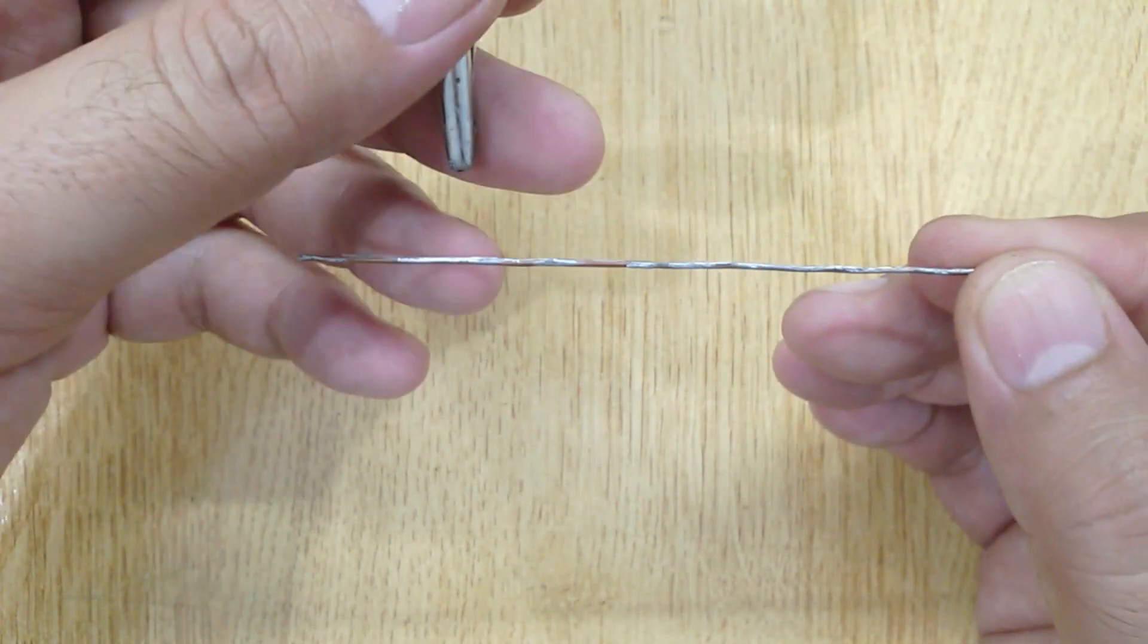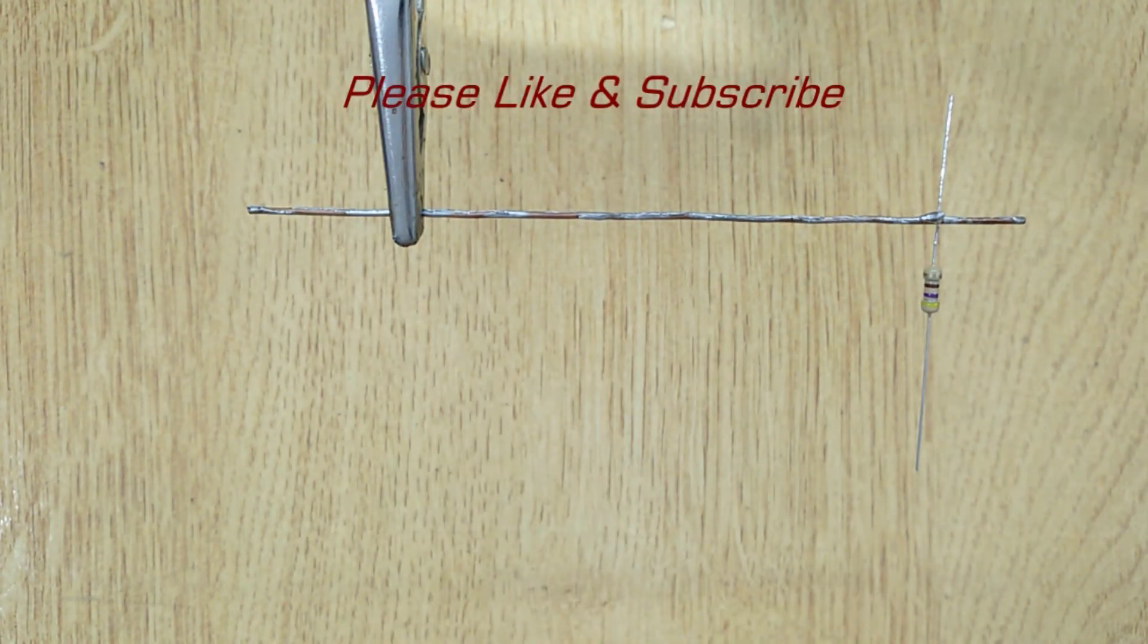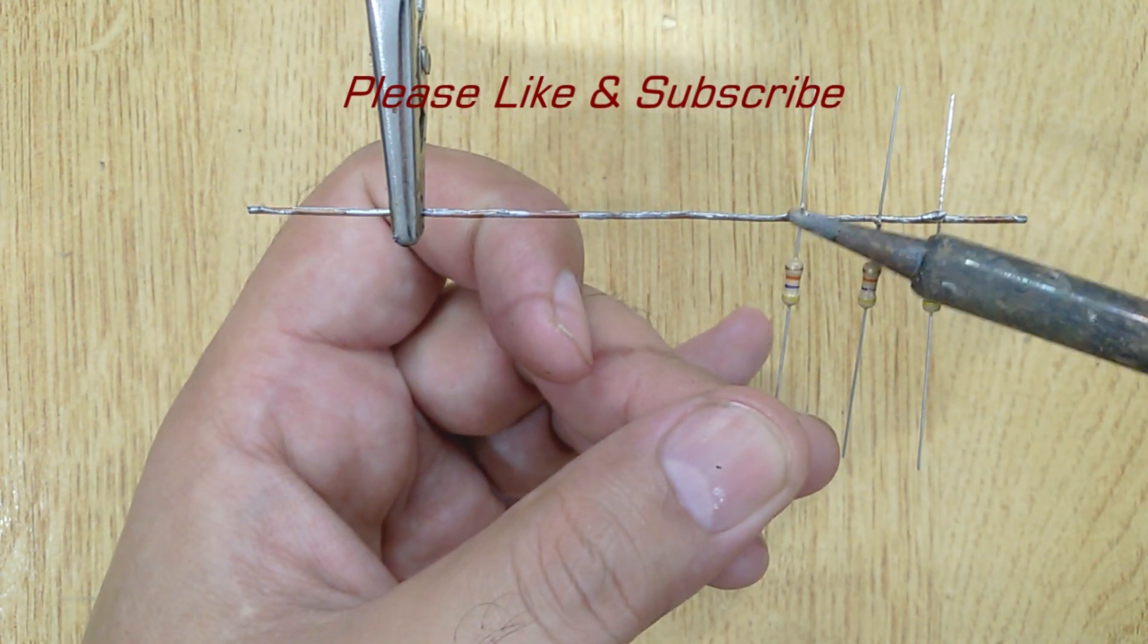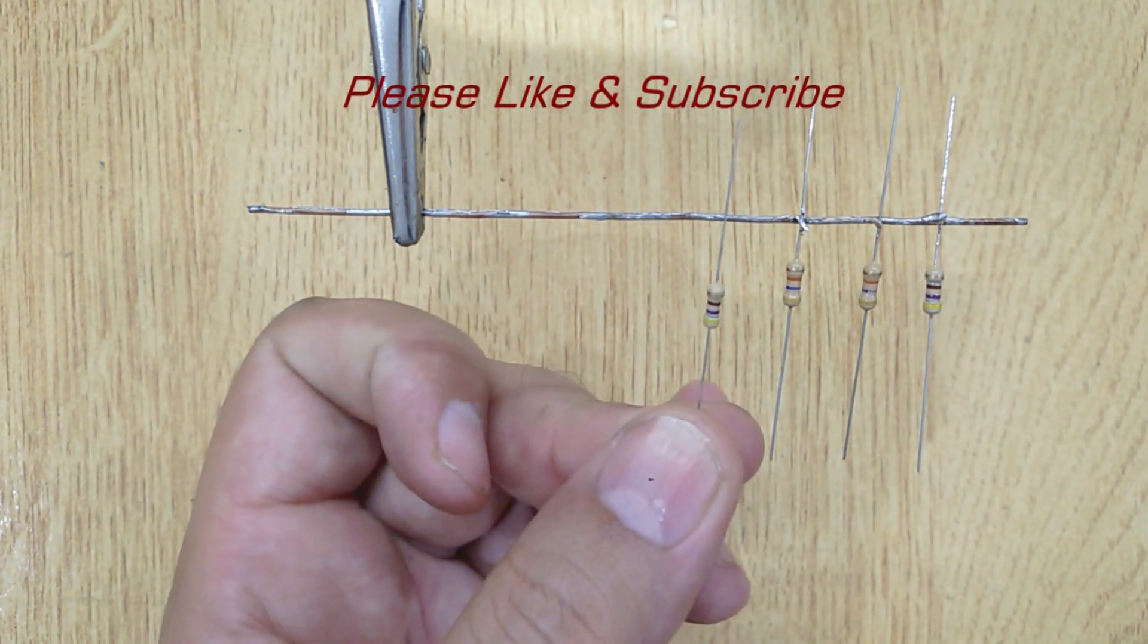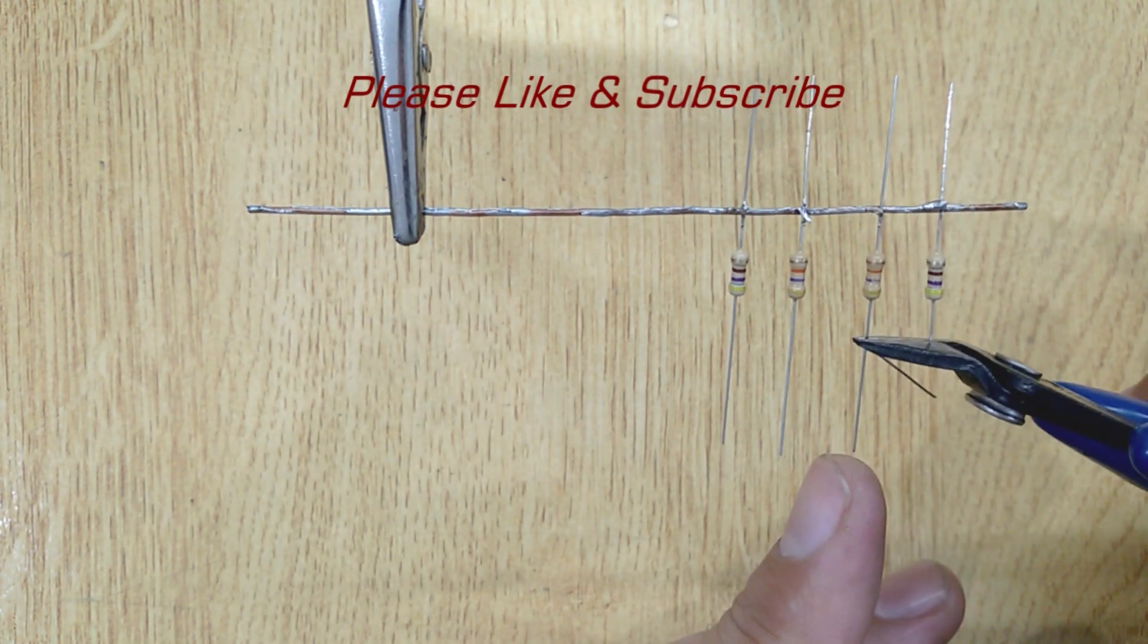Let's get started. Get a metal wire and solder a 470 ohm resistor with it. After that, solder two pieces of 47k ohm resistors with it, and then solder another 470 ohm resistor. Now cut all the extra length of pins.